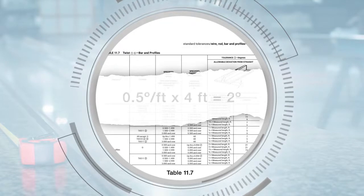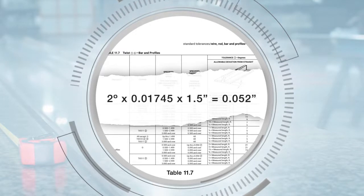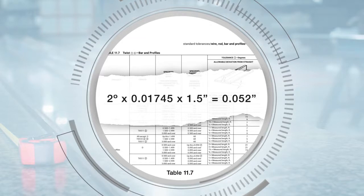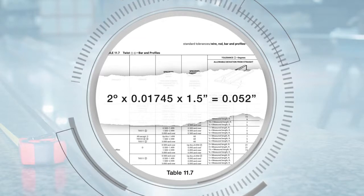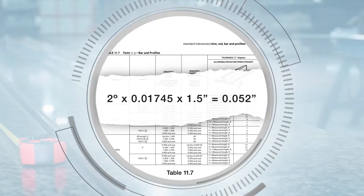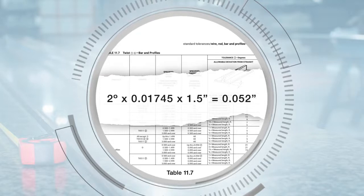You can convert degrees to inches by multiplying two degrees by 0.01745 by 1.5 inches width, and get 0.052 inches allowable gap due to twist over a four foot distance.